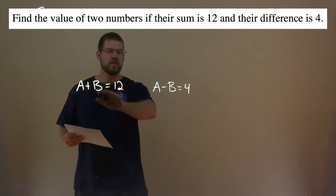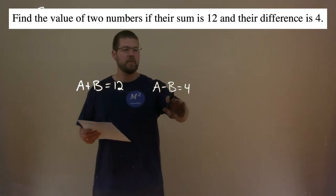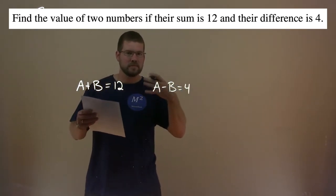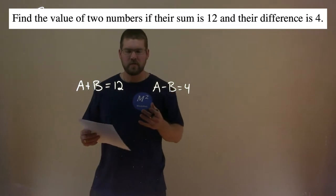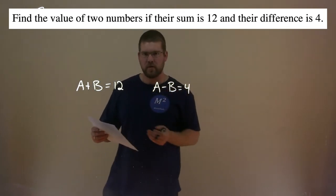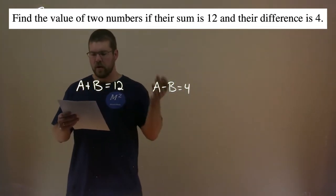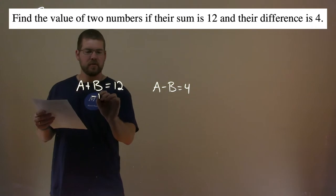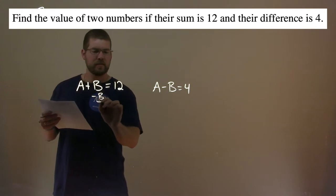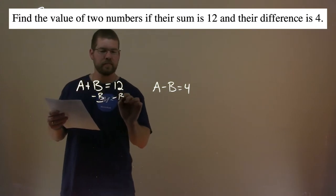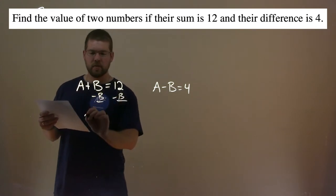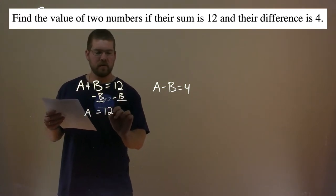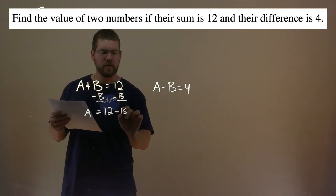We have now set up our system of equations, and now we have to solve for our letters. Let's subtract B from both sides here, and we're left with A by itself, equals 12 minus B.